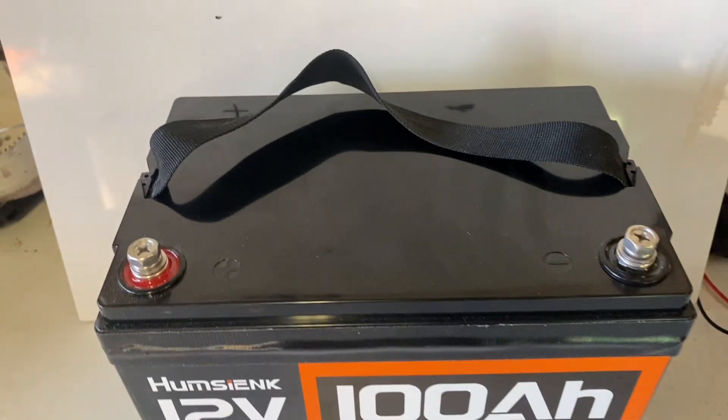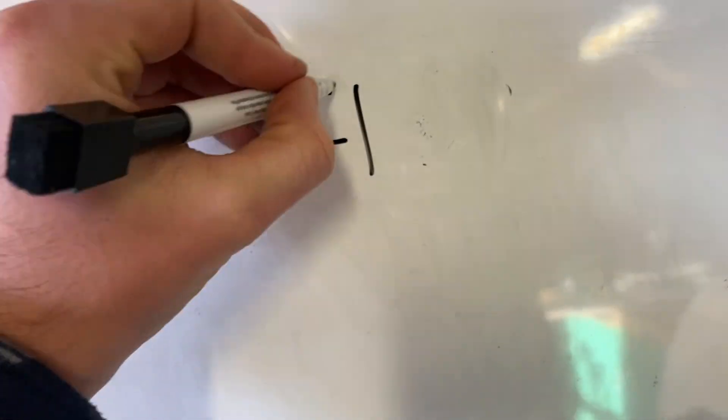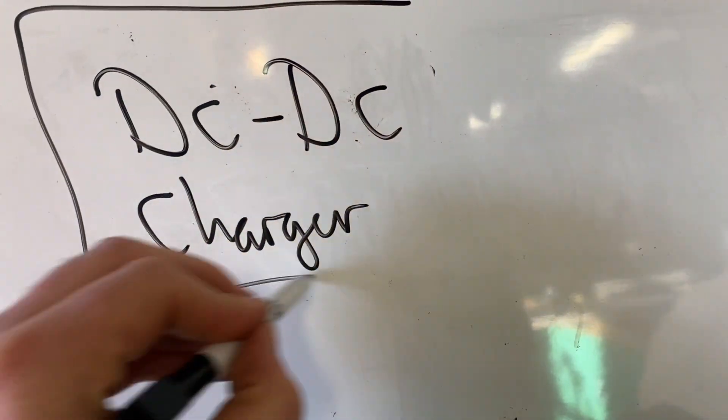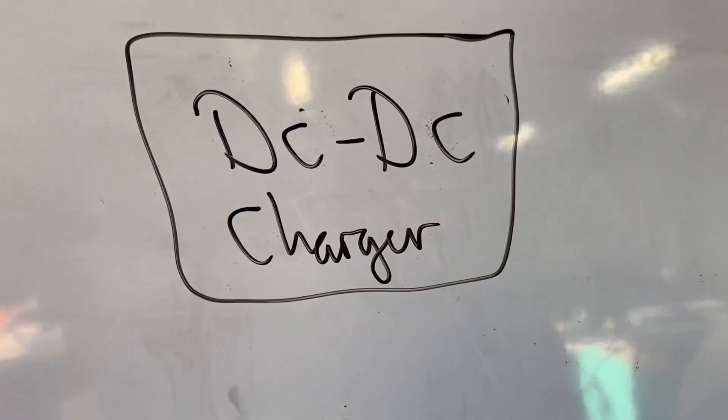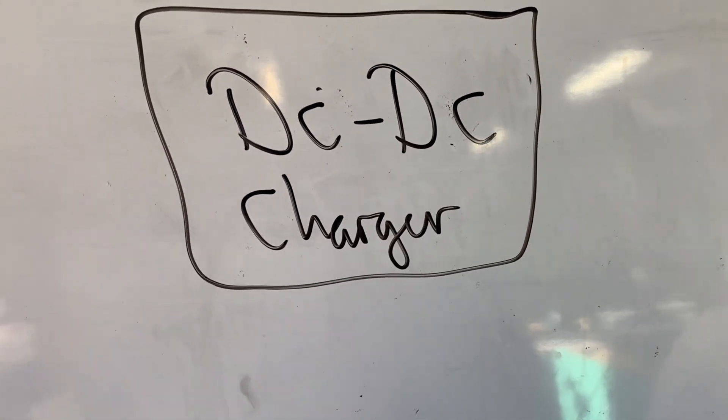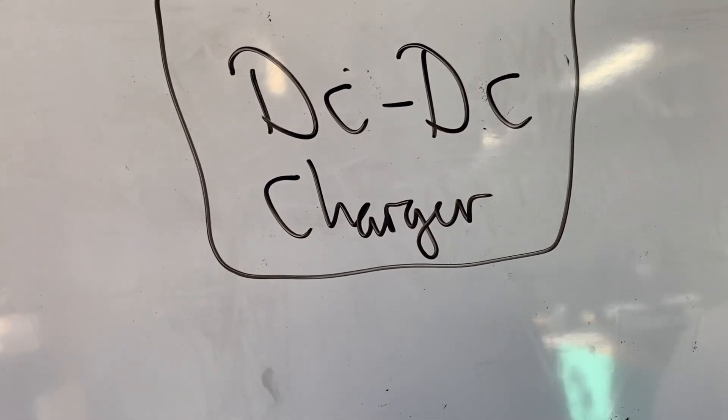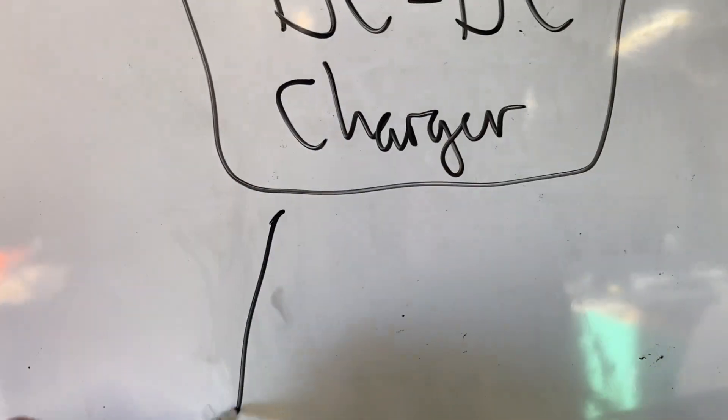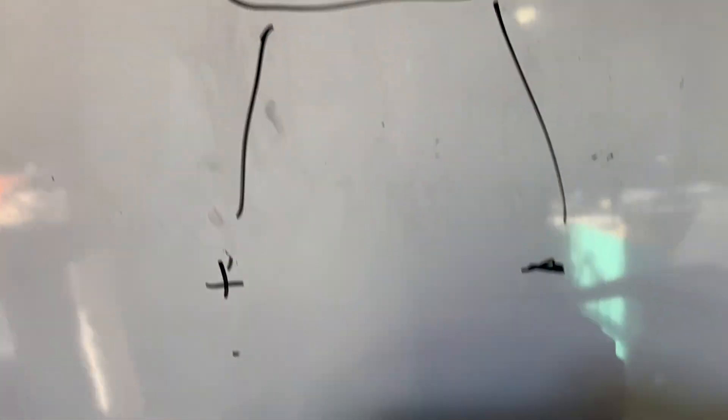If you're in an RV or a camper van or something like that, you could use something called a DC to DC charger connected to your regular starter battery, will be charged by your alternator, and it will run through the DC to DC charger and charge your lithium iron phosphate battery.